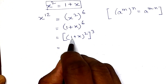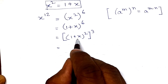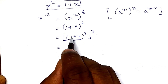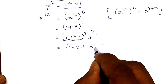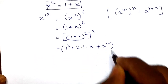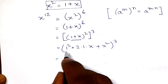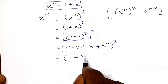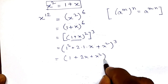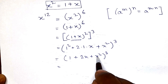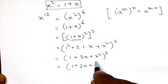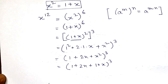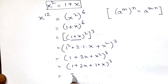Considering 1 plus x as a plus b, we expand (1 plus x)² using the (a plus b)² formula: 1 squared plus 2 times 1 times x plus x squared, which gives 1 plus 2x plus x². Now substituting x² with 1 plus x, we get 1 plus 2x plus 1 plus x, so 1 and 1 add to 2, and 2x and x add to 3x, giving us 2 plus 3x.